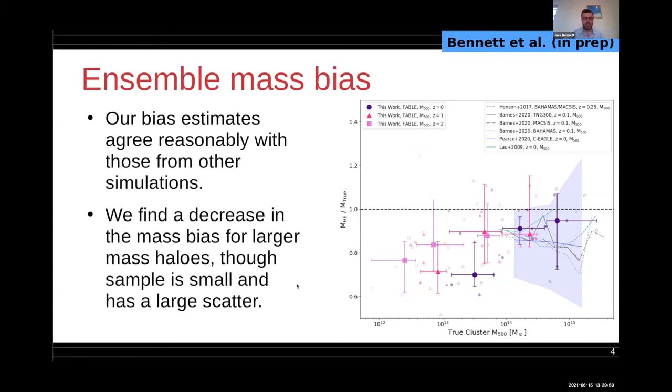You might be able to find a decrease in the mass bias for larger masses of halos, but our sample is quite small and there is a large scatter in all works. Some of the individual halos shown here with empty symbols are classed as morphologically disturbed through their X-ray emission, and they tend to be some of the more extreme bias values. As a broad picture, we find the 10-20 percent hydrostatic mass bias on average that lots of other people find.